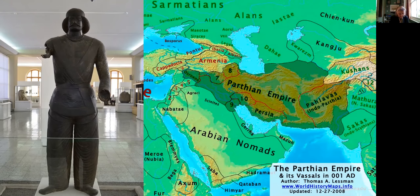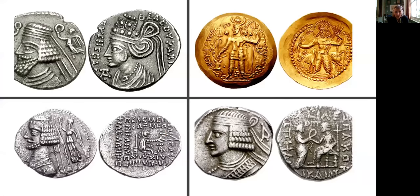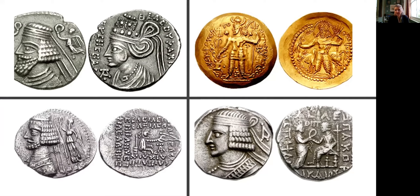With the Parthians we move more towards the emergence of Middle Persian as the language of the empire. To begin with, Greek, Imperial Aramaic, and Hebrew were more used. As you see in the coinage, gradually Middle Persian emerges, but the inscriptions are again in Greek.